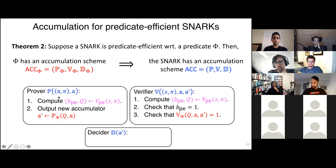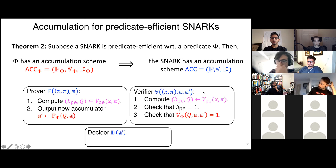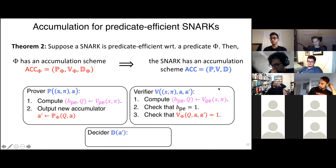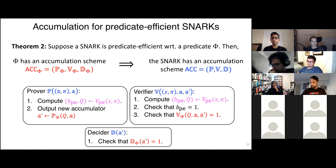The accumulation verifier for the SNARK runs V_PE on (x, π) to get the bit and query set — V_PE is cheap so it can always run it — checks the bit is one, then invokes the accumulation verifier for the inner predicate V_φ on the query, old accumulator, and new accumulator. The decider just invokes the decider for the predicate. Security straightforwardly reduces to the accumulation scheme for the predicate, and we get nice properties: if the inner accumulation scheme is quantum secure, so is the outer one.